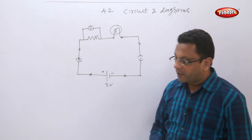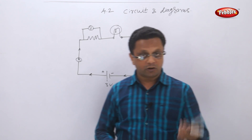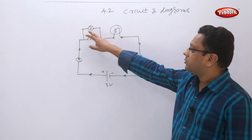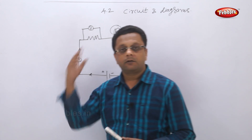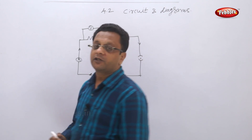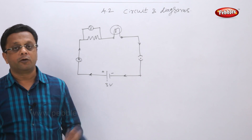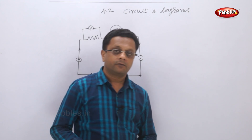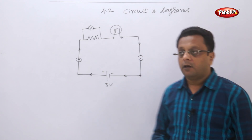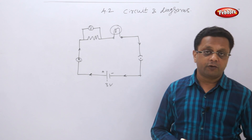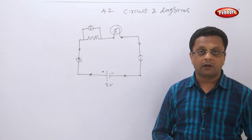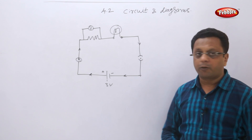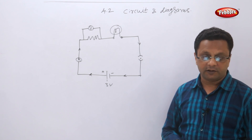Now let us move ahead to the next topic. Why is the voltmeter connected in parallel? I told you that unless and until you create a potential difference, the current will not flow. So let us see what potential difference is.